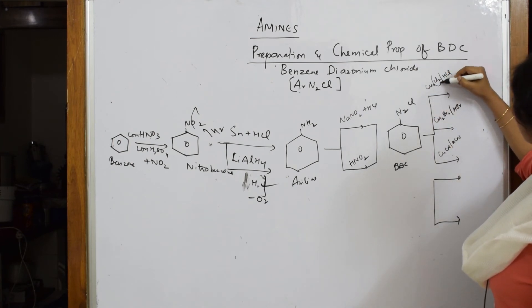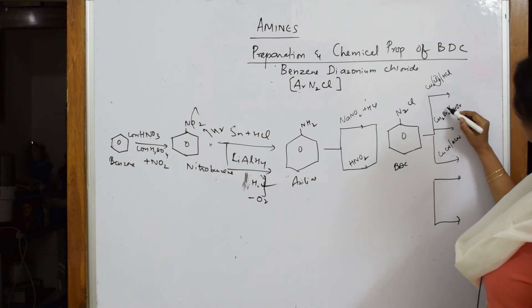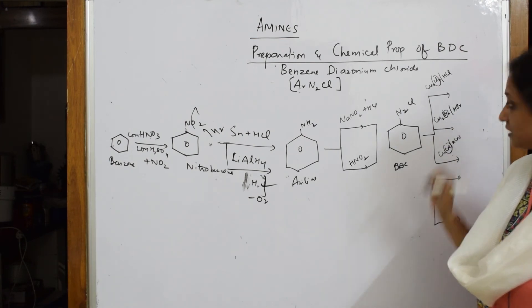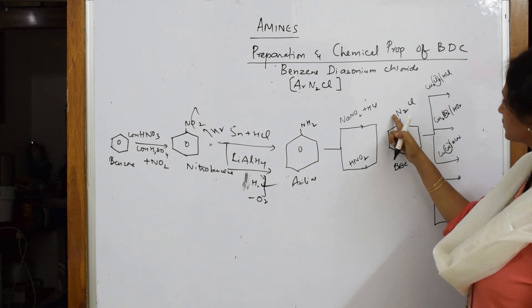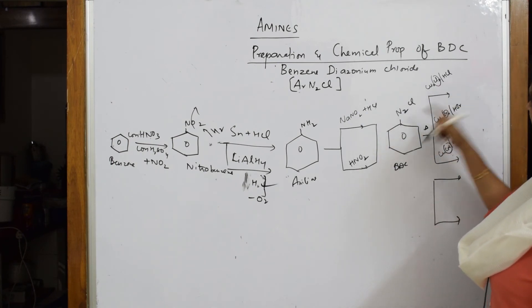Here Cl minus, here Br minus, here CN - nucleophile that will replace. First, when I heat this with these, nitrogen gas escapes out everywhere. Nitrogen gas escapes out. So this is going to form a compound called chlorobenzene. This escapes out.